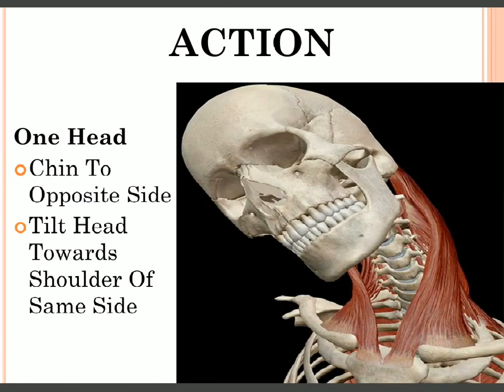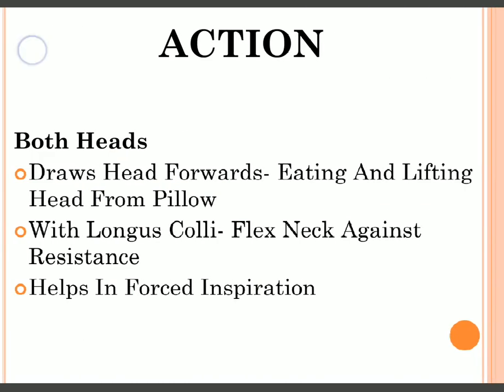Regarding action: when only one head contracts, the chin moves to the opposite side and the head tilts towards the shoulder of the same side. So the head bends towards the shoulder of the same side and the chin moves to the opposite side — that is the action of the sternocleidomastoid with unilateral contraction.